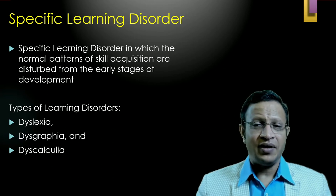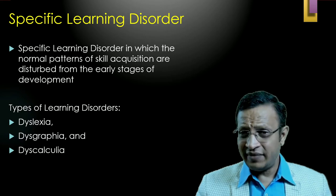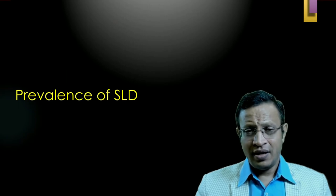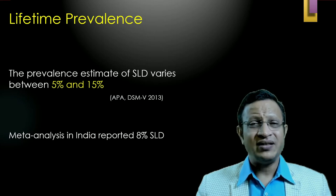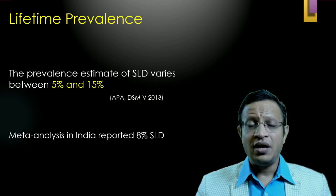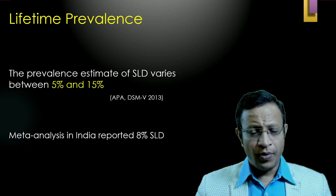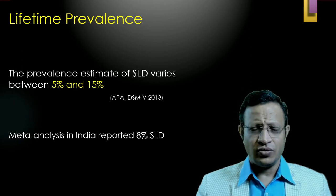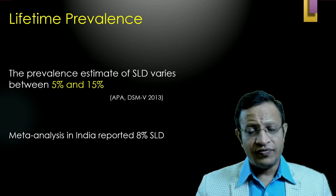It is a disabling condition in which the normal pattern of skill acquisition is disturbed from the early stage of development. There are three important categories named under SLD: dyslexia, dysgraphia, and dyscalculia — present in both ICD-11 and DSM-5. The American Psychiatric Association reports prevalence between 5 to 15 percent depending on the population studied and the screening instrument used. However, in India, a meta-analysis has reported 18 percent of children are suffering from specific learning disorder.